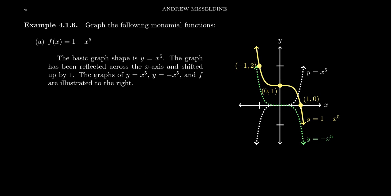So if we wanted to graph the function f of x equals 1 minus x to the fifth, we can graph this using transformation techniques that we've seen in the past. We're going to start off with the very basic function y equals x to the fifth. As this is an odd-power monomial, it's going to have this basic shape.